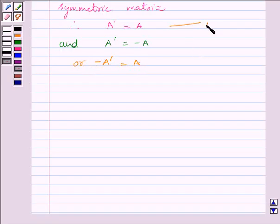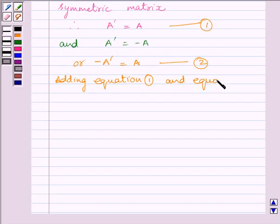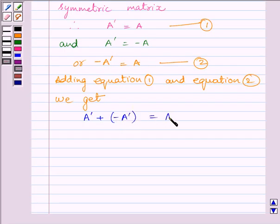Let us name this expression as 1 and this expression as 2. Now adding equation 1 and 2 we get A transpose plus minus A transpose is equal to A plus A. Or we can write A transpose minus A transpose is equal to 2A. This implies 2A is equal to 0. This further implies A is equal to 0.